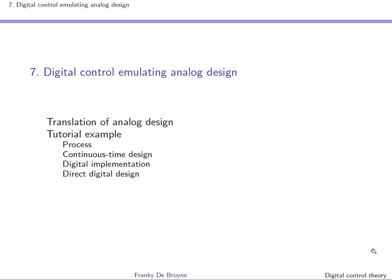This is called direct digital design. We will see that if Ts is small compared to the time constants of the system, the first strategy will work. But as Ts, the sampling period, grows, strategy two will increasingly become the best method to use.